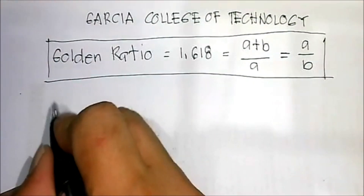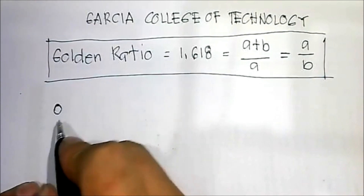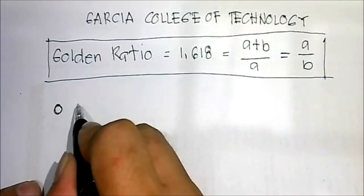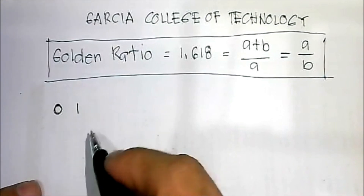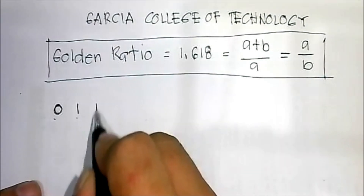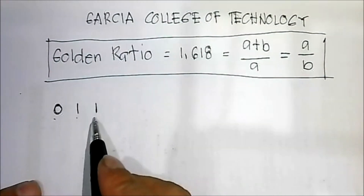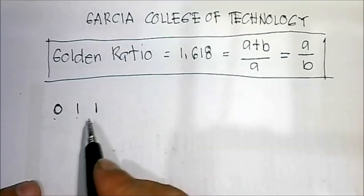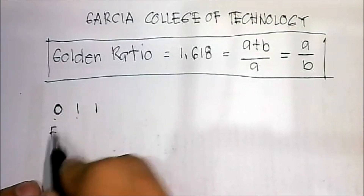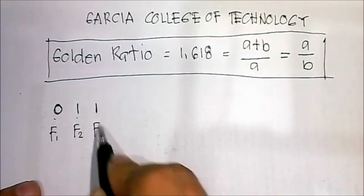The Fibonacci sequence starts at 0. The next number is 1, and the next is 1. The pattern is: 0 plus 1 equals 1. We label these as Fibonacci number 1, Fibonacci number 2, and Fibonacci number 3.